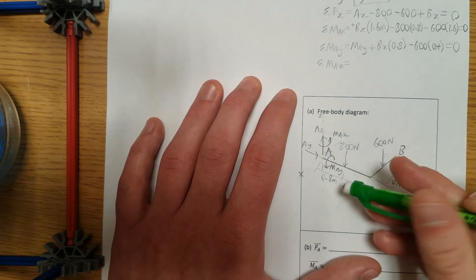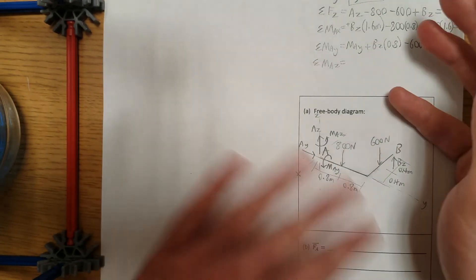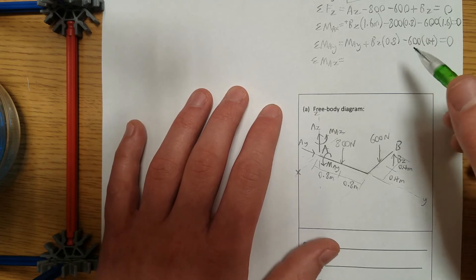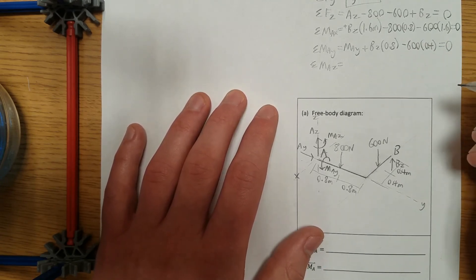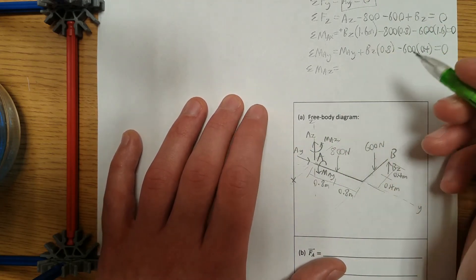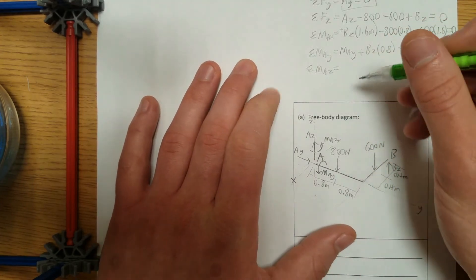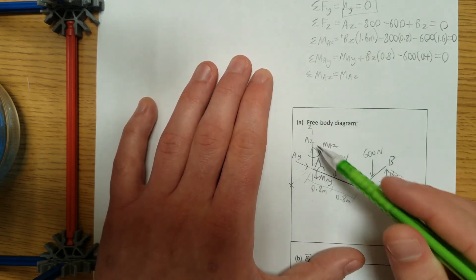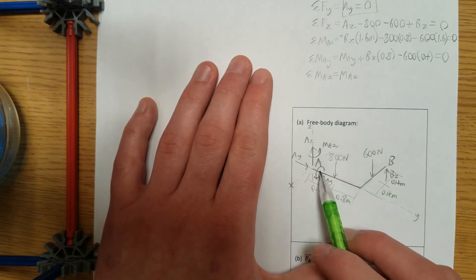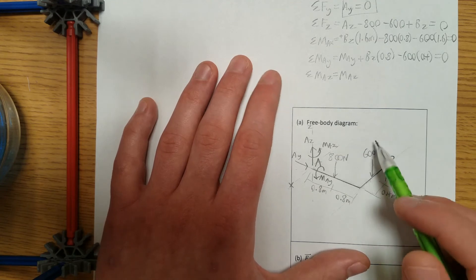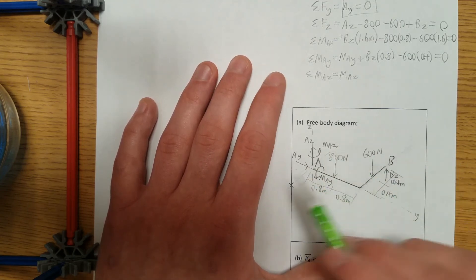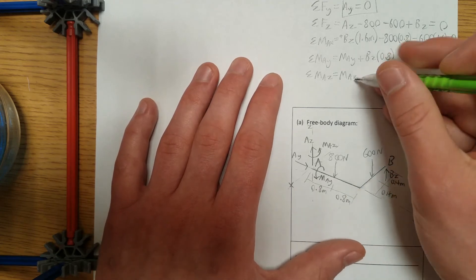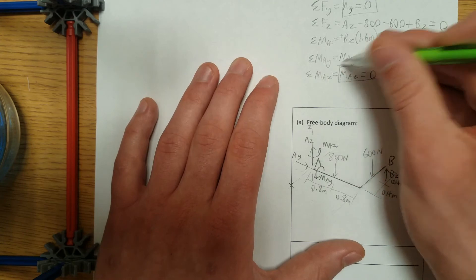Just to note: in the exam you have about 22 minutes per problem, so be cautious of your time. For sum of moments about Z: we have MAZ, and the applied forces are acting parallel to the Z axis, meaning they cause no moment about Z. So it's just MAZ equals zero — that's another component solved directly.